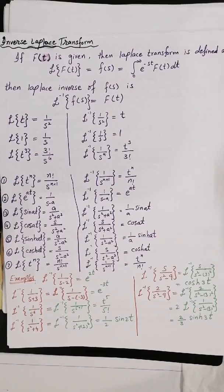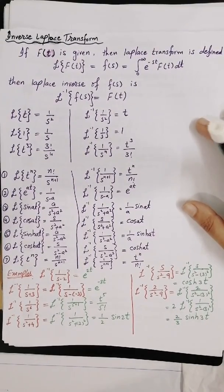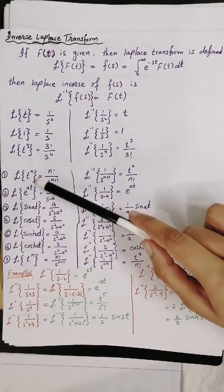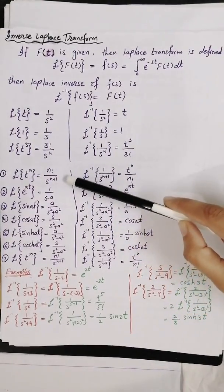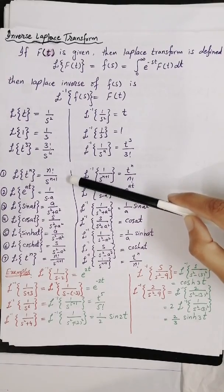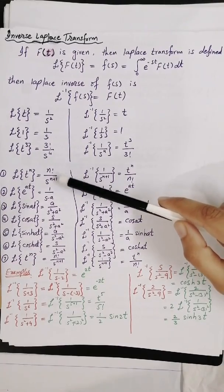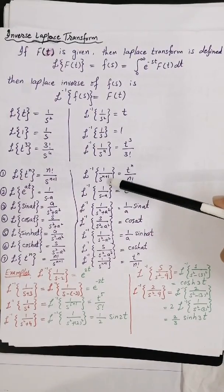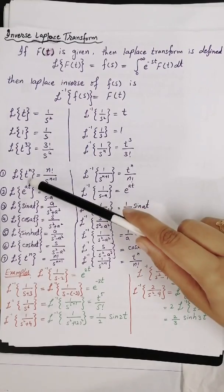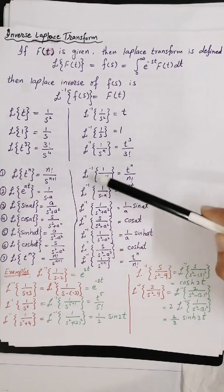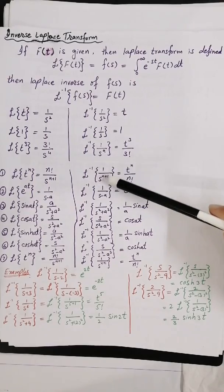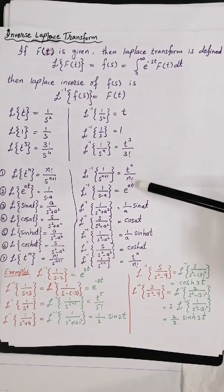To find the inverse Laplace transform, we use the formula: Laplace of t^n equals n factorial over s^(n+1). So if we find the Laplace inverse of 1 over s^(n+1), we can write directly that the Laplace inverse of 1 over s^(n+1) equals t^n over n factorial.